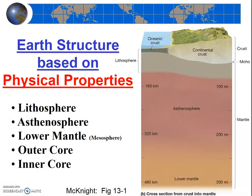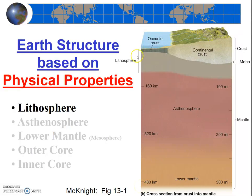The five layers based on physical properties are: the lithosphere, the asthenosphere, the lower mantle (which some textbooks call the mesosphere), the outer core, and the inner core. On this diagram, you can see only three of the layers shown—the lithosphere, the asthenosphere, and the lower mantle—but future diagrams will show the outer and inner core as well. First, let's consider the outer layer, the lithosphere.